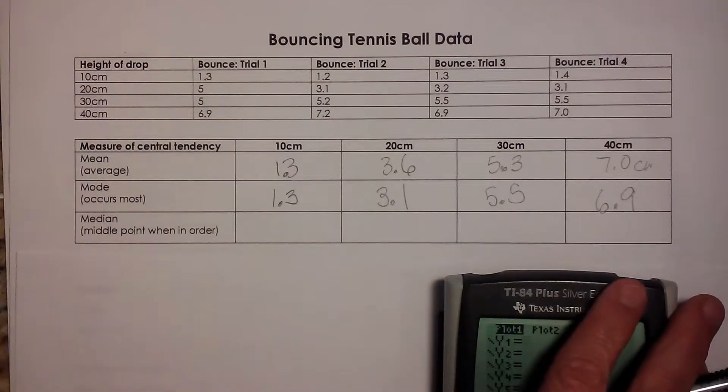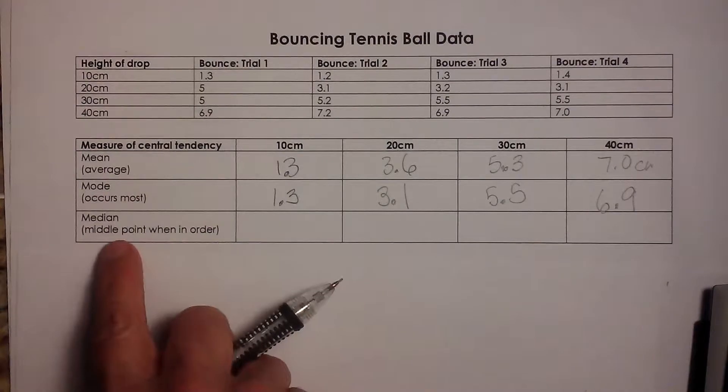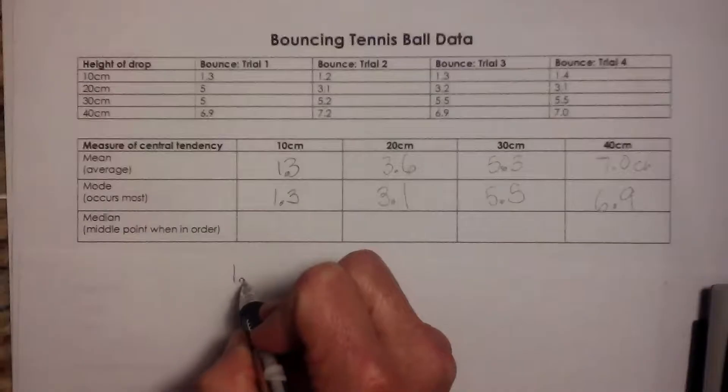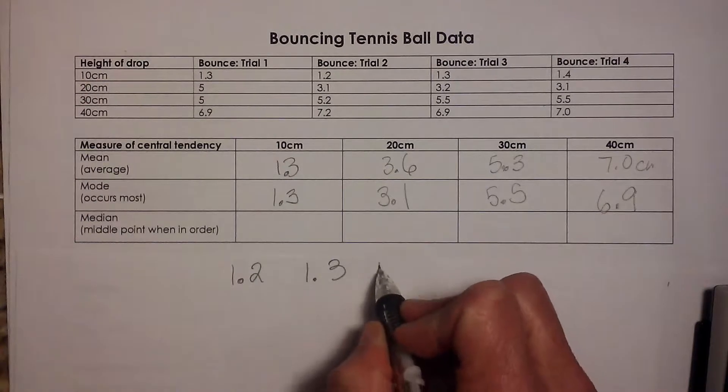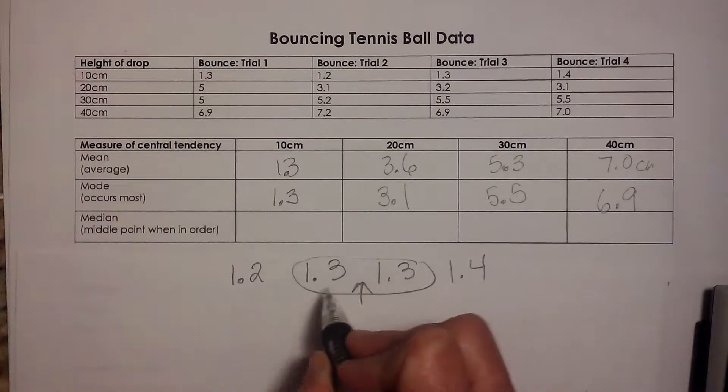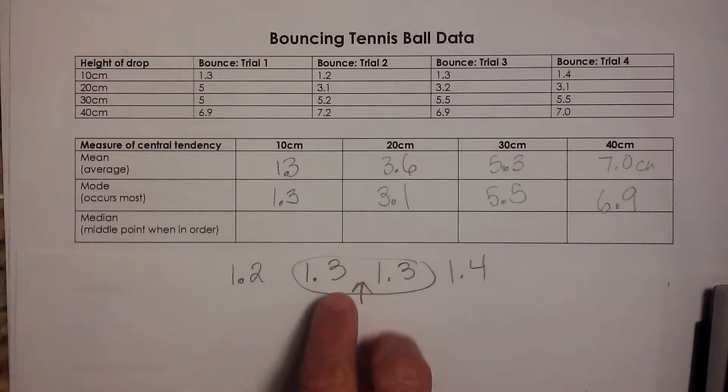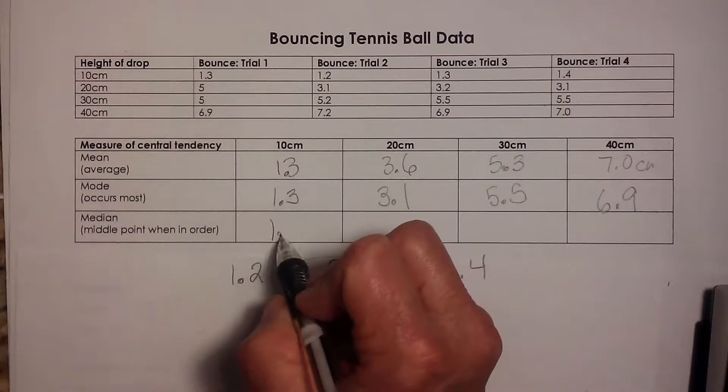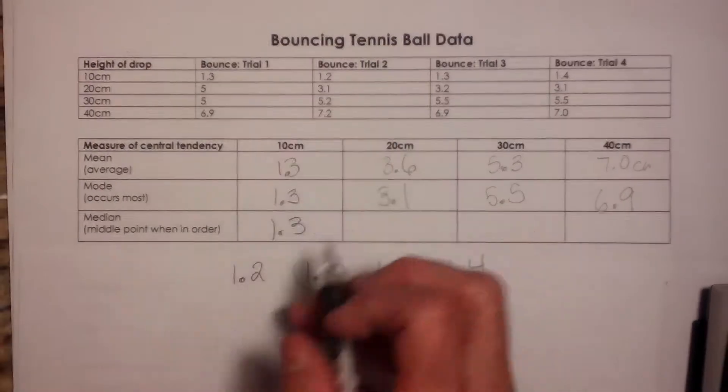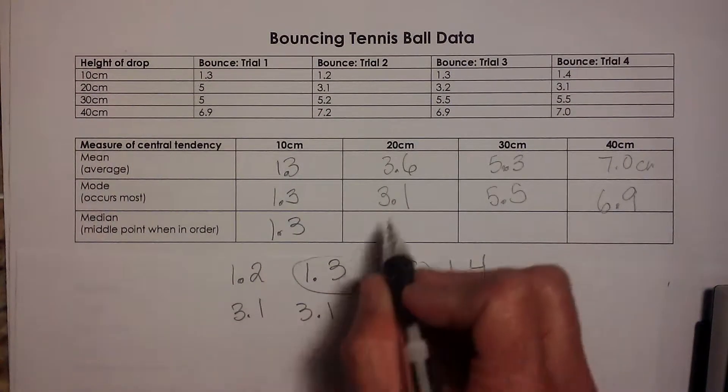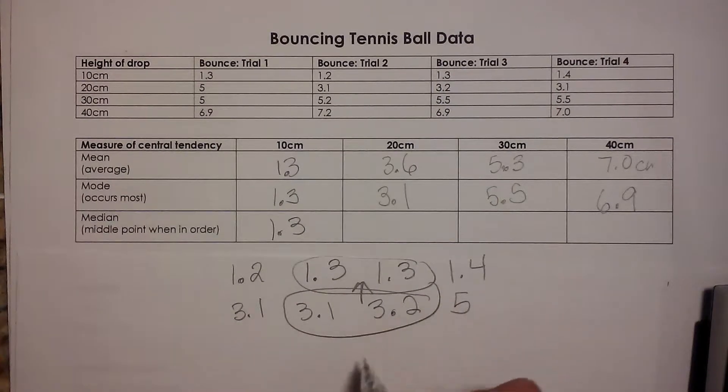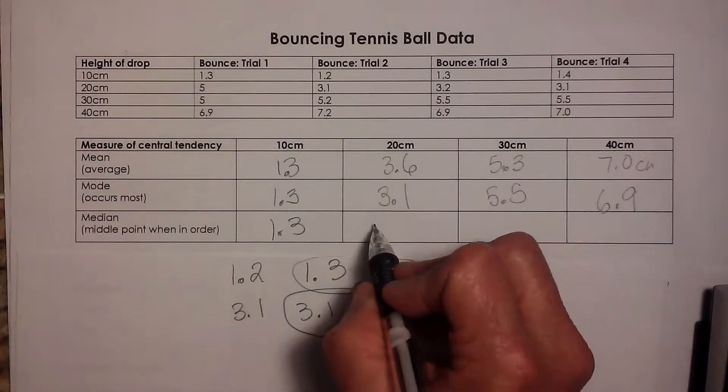And now the median. The median, we have to figure out by finding the middle value. So you have to take an extra step. You need to list your data in order. So I'm going to look at the 10 centimeter trials. My smallest is 1.2. Then I have a 1.3, another 1.3, and then a 1.4. So what is my middle value? Well, it would fall between the second and the third term, the second and the third values. So I would average these two, and my average is 1.3. Okay. I'm going to do the same thing for the 20 centimeters. My lowest values are 3.1 and 3.1. Then my next one is a 3.2. And then 5, the one that was way out. Okay. So now we're going to average these two. So when you average that, you get 3.15.